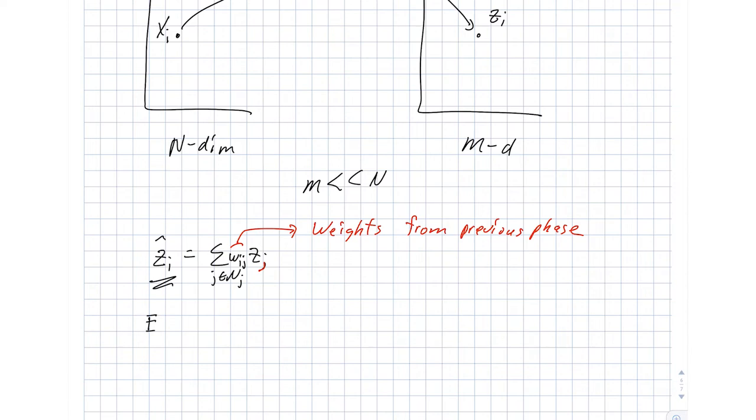So our new cost function in this new space is a sum over all samples. And in the book, what they say is sum over all samples. And this is magnitude of the difference between the real position and the reconstruction. And that's squared.